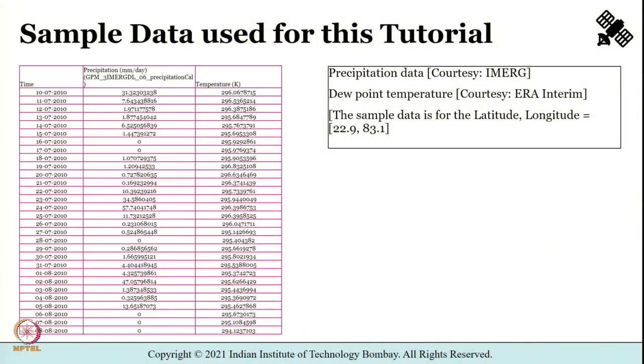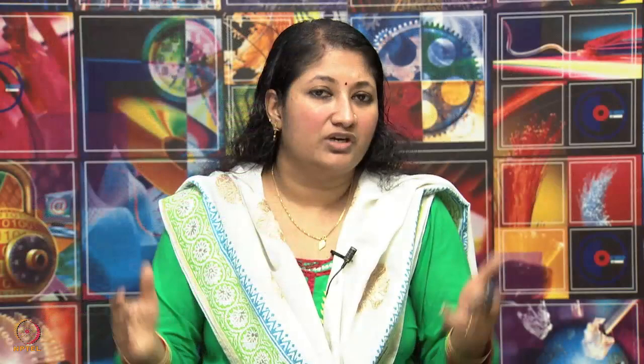Whenever we arrange data in a usable format, it equips decision makers to make intelligent decisions. Nowadays, even if we collect enormous amounts of data, we can compress them instantly into tables, graphs, or numbers. As part of this tutorial, we will understand a few ways to summarize information from raw data. We will start with histograms.